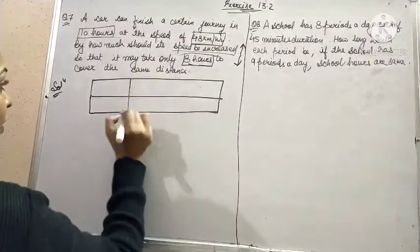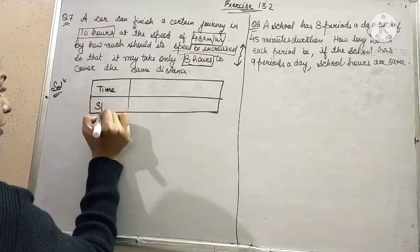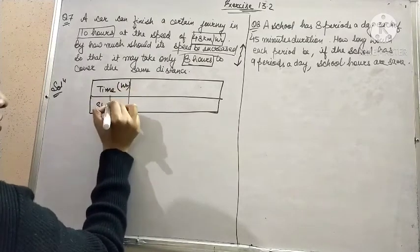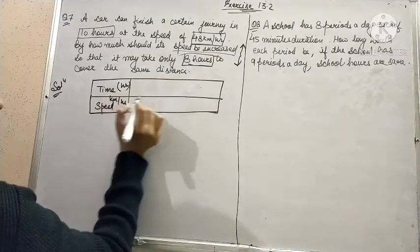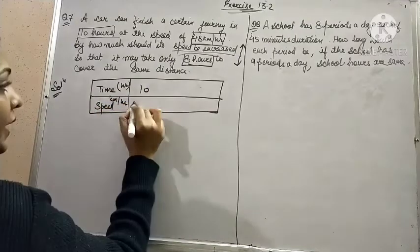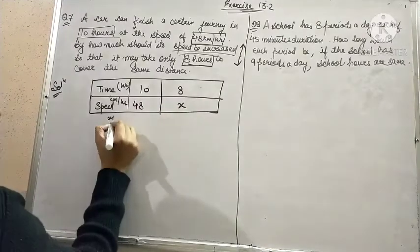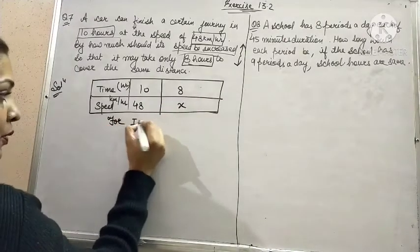You have to take time and speed. Time is in hours and speed is km per hour. 10 hours, 48. Here we are having 8. Take X.